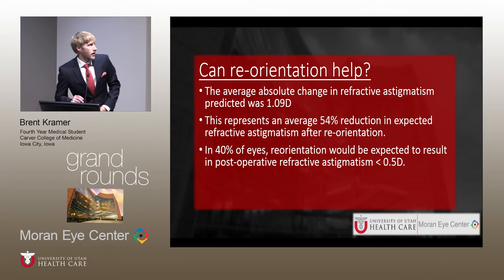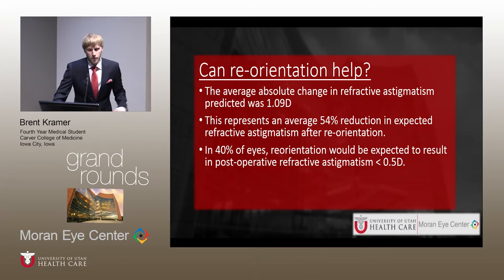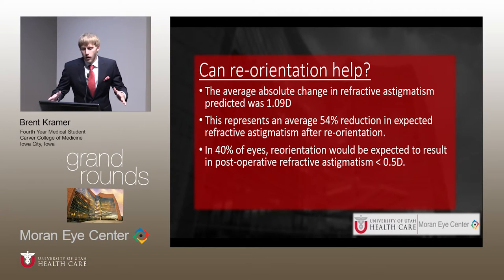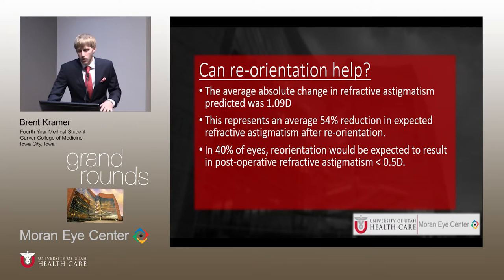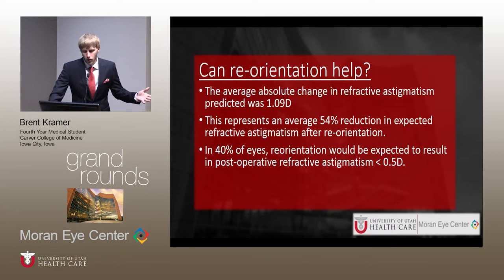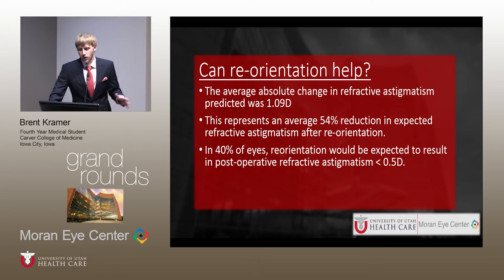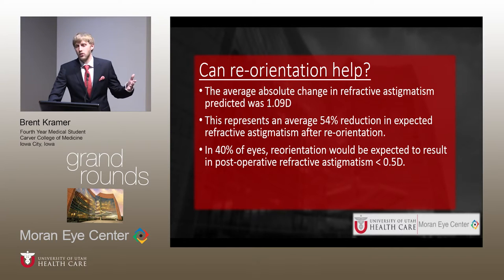Moving on: can reorientation help? All comers to the website had about 1.8 diopters of residual astigmatism. By rotating IOLs to their ideal location, you can reduce that by over a diopter — about a 54% reduction overall. About 40% of the entries could have residual astigmatism minimized to below half a diopter.